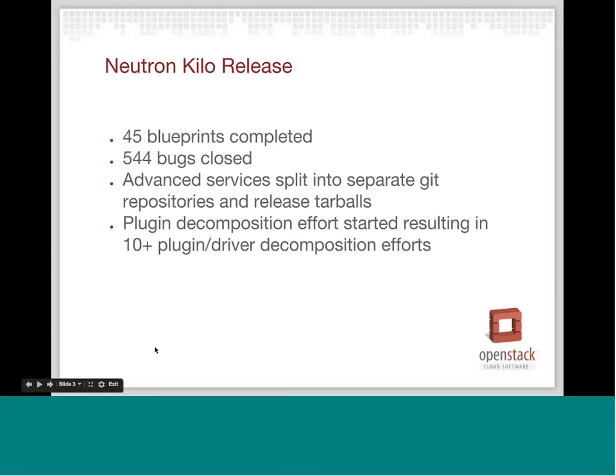Let's take a quick peek back at Kilo as far as Neutron is concerned and see what we did. These are just the raw statistics from Launchpad — what we actually completed in Kilo. You can see we completed 45 blueprints and we closed 544 bugs as well. Those are pretty good numbers and they're pretty much in line with what we did in the Juno release as well.